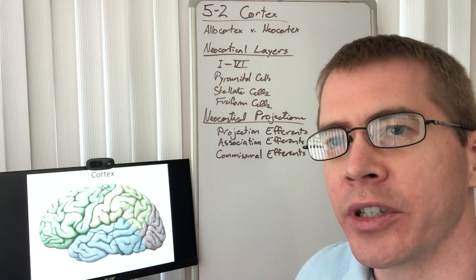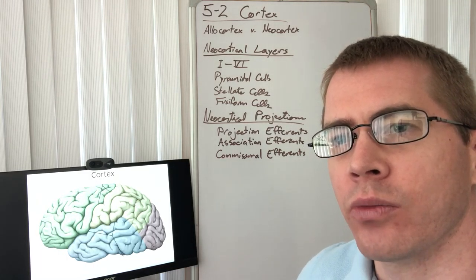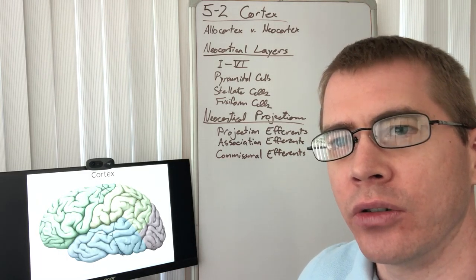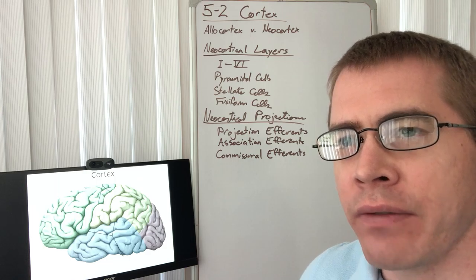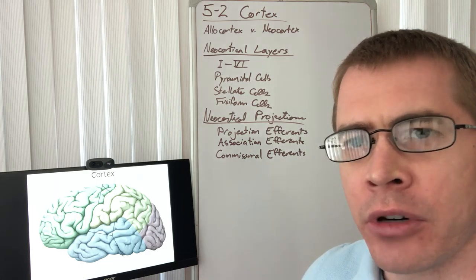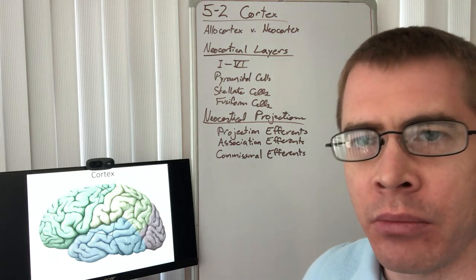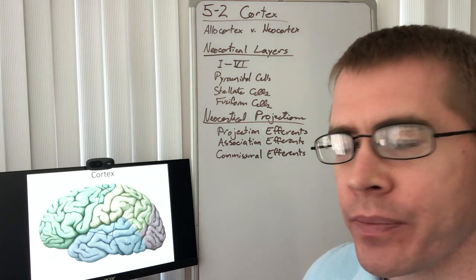Okay, so we learned about the thalamus. Now let's talk about where those fibers go to the cortex. This is lecture 5-3, and I'm probably going to split this up into multiple parts.